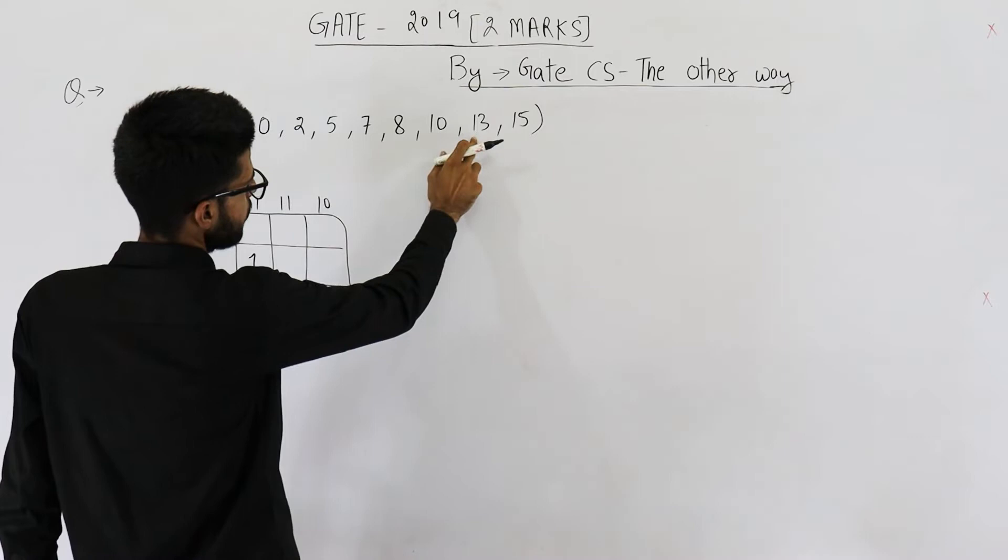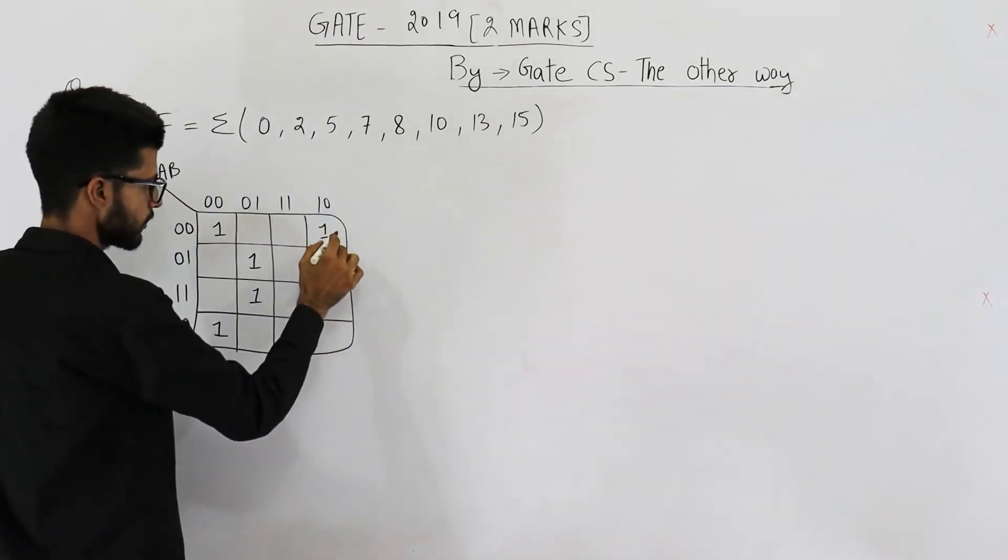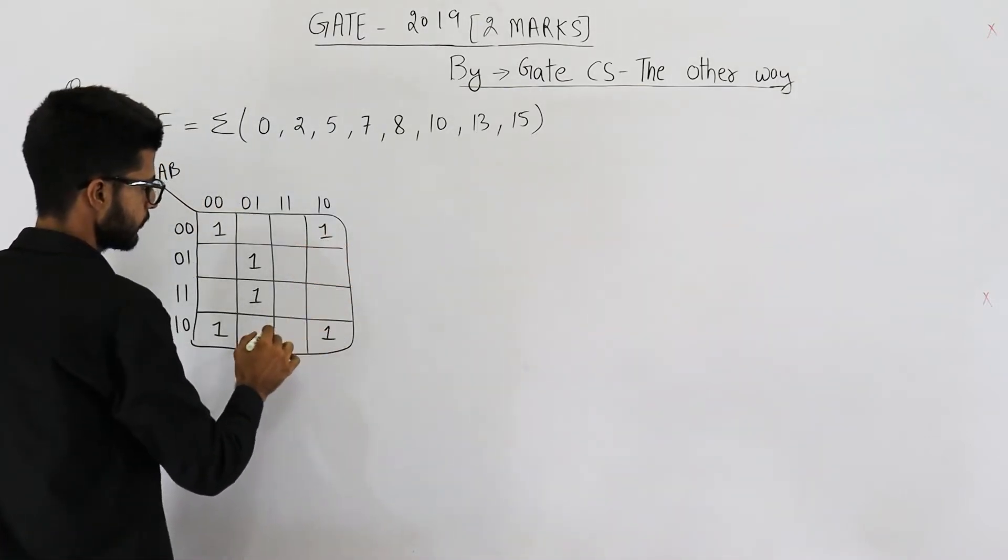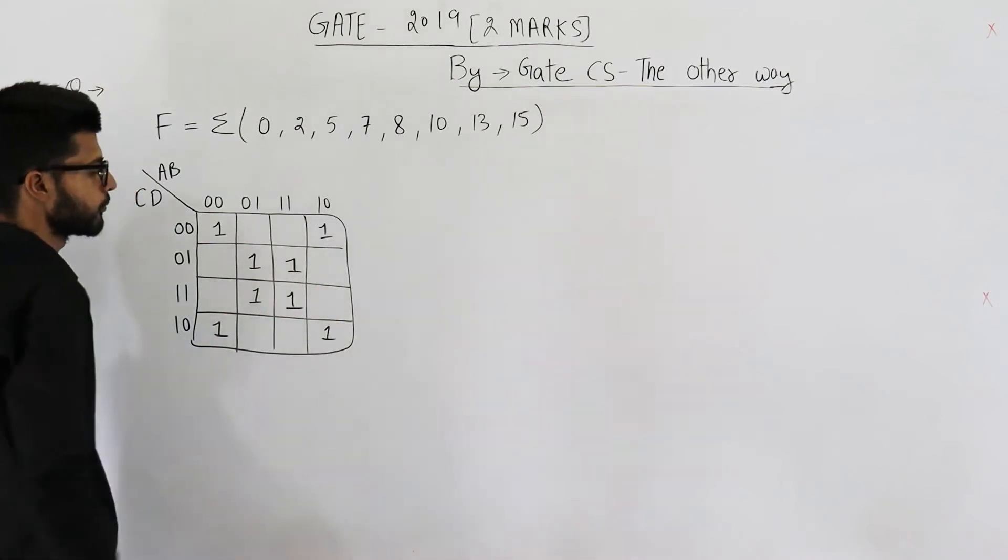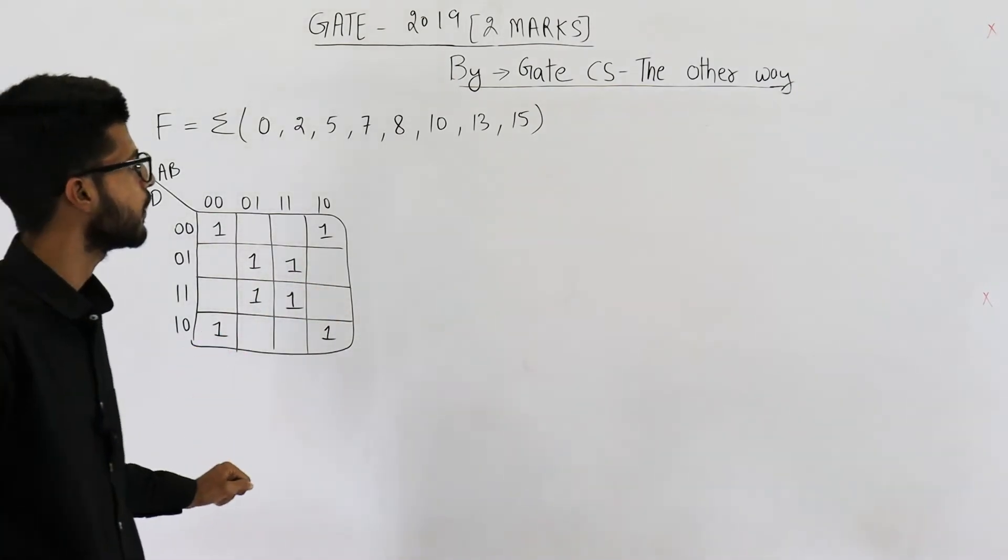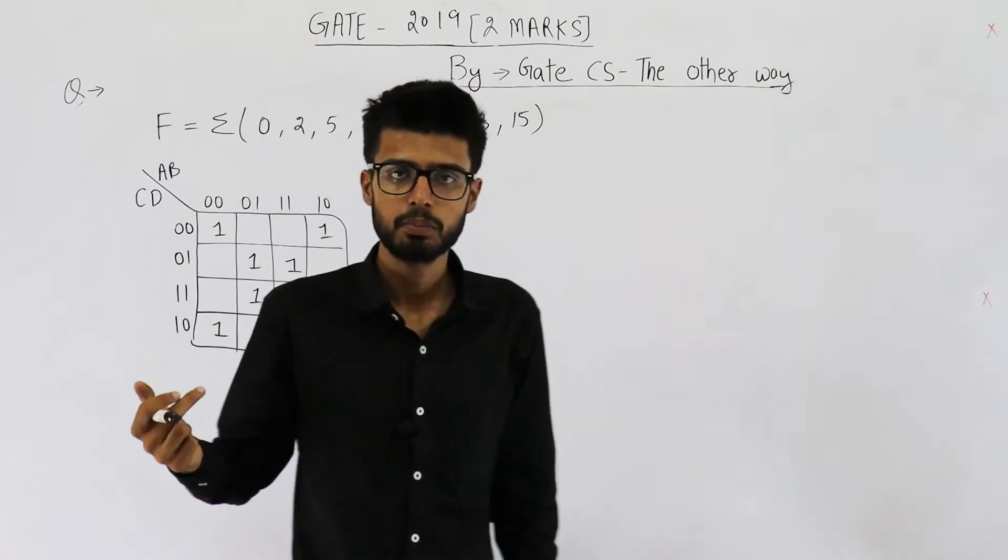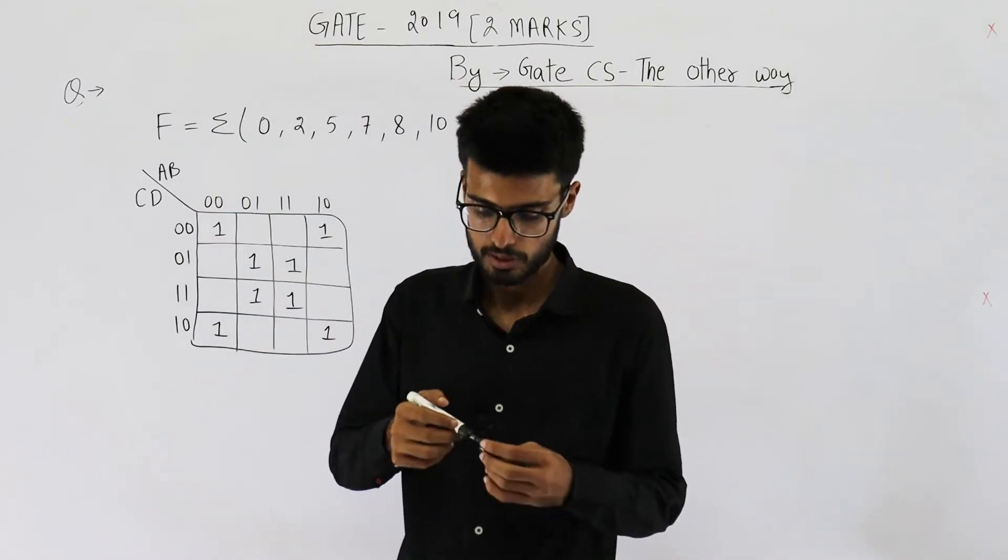Then you have 8, 10, 13, 15. 8 is here, 10 is here, 13 and 15. So these are all the ones or all the places where function outputs a 1.